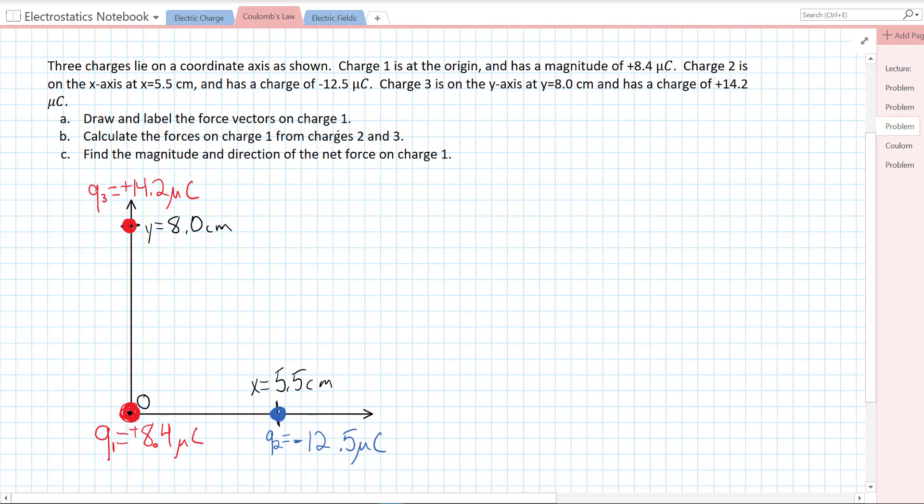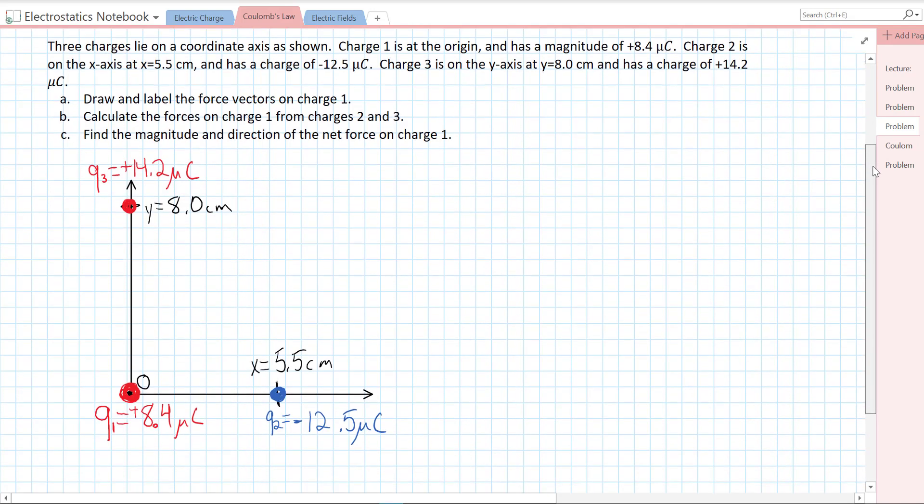We know that forces act independently. To find the net force, we just need to add up all the other force vectors that are acting. Let's take a look at our diagram. We have Q3 up here, Q1 down here, and Q2 over here. Q1 is going to feel a force from Q3 and it's going to be repulsive. In green, I'm going to draw that force vector as a downward arrow. That's the force on one from three, pointing straight down.